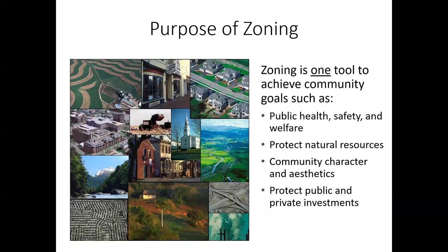Zoning is one tool — and I would argue a major tool — to achieve our community goals that might be in a comprehensive plan. Some of those goals include protecting public health, safety and welfare, protecting our natural resources — whether that's forests, ag lands, waters, lakes and rivers, groundwater, drinking water — protecting community character and aesthetics, and protecting both public and private investment.